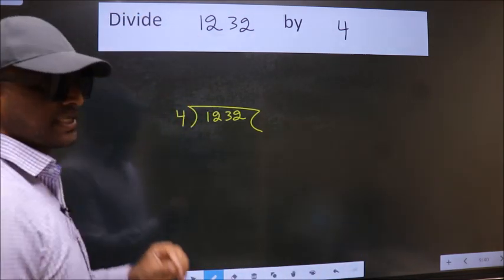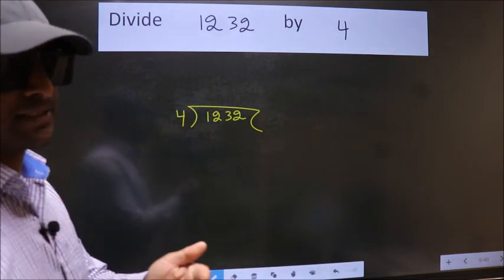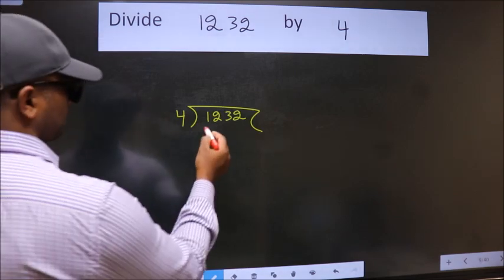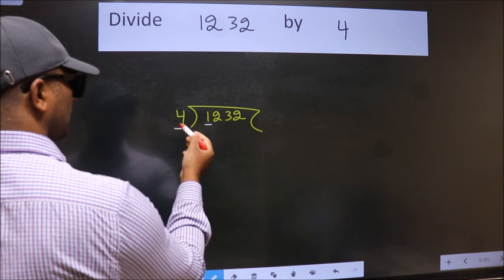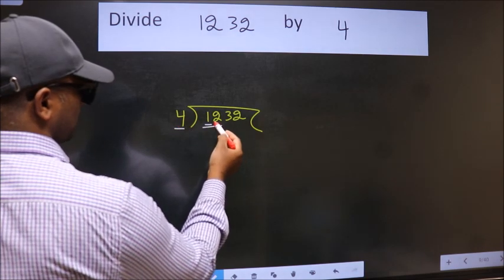This is your step 1. Next, here we have 1, here 4. 1 is smaller than 4, so we should take two numbers: 12.